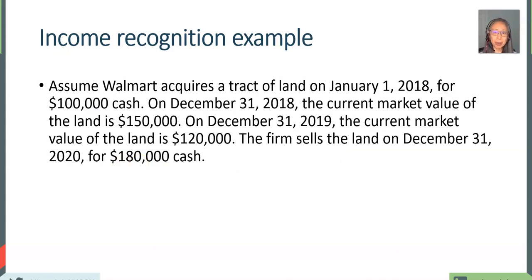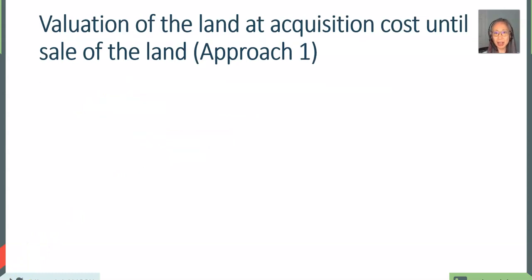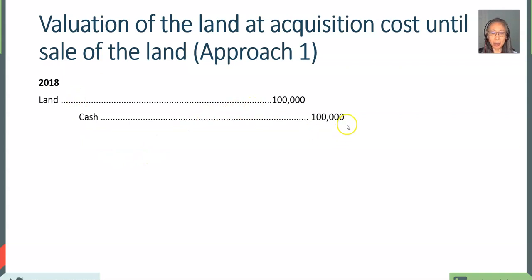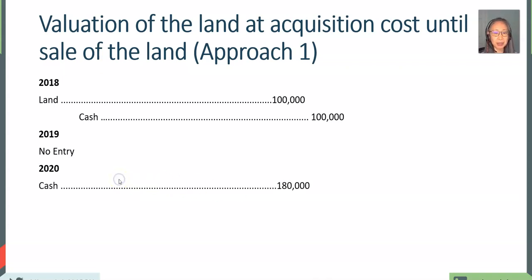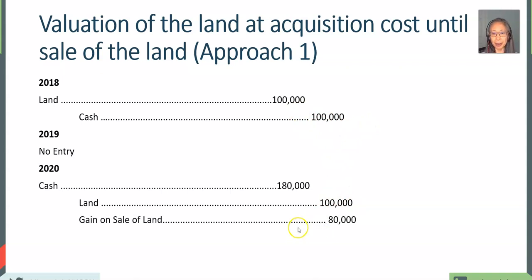The first approach only changes valuation when there are actual changes in assets — meaning a transfer of cash for land, and then later land for cash. When the land was acquired in 2018, we recognize that we paid $100,000 cash for a piece of property. The change in market value would not be recorded. But when the company sells the land, we recognize receiving $180,000 in cash. Since we acquired the land for $100,000, we recognize a gain of $80,000 at that point in time.